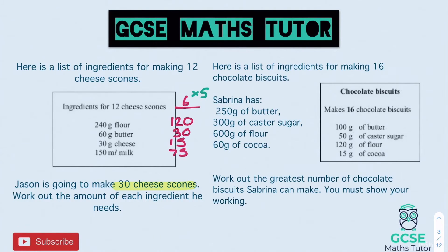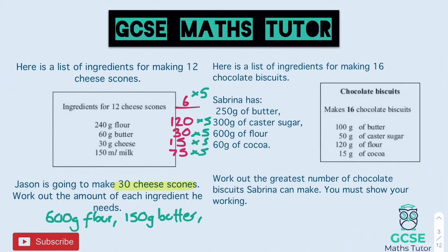Multiplying the six-portion recipe by five: flour — 120 × 5 = 600 grams; butter — 30 × 5 = 150 grams; cheese — 15 × 5 = 75 grams; milk — 75 × 5 = 375 millilitres. That's our final answer for 30 cheese scones.